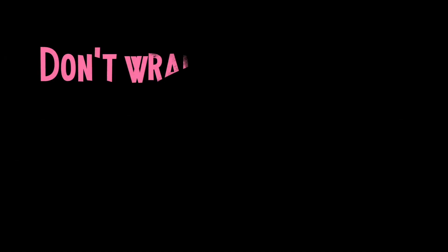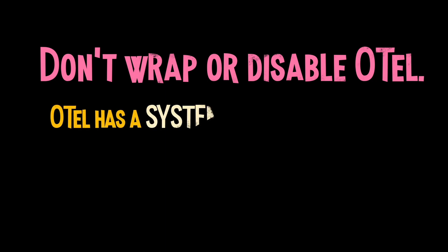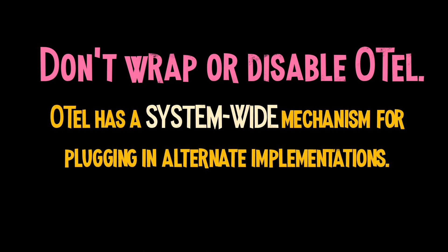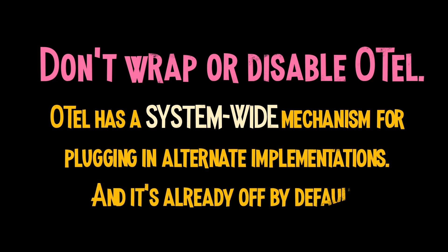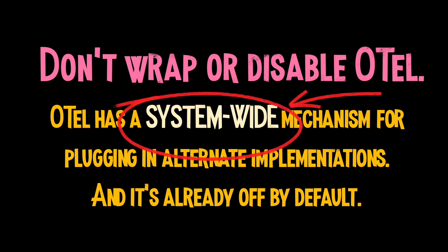Don't wrap the OTEL API up in another API, or otherwise make it off by default. The OTEL API already contains a mechanism which allows users to plug in their implementation of choice, and the API defaults to a no-op if they aren't using observability at all. The difference is that with OTEL, that same implementation is automatically installed everywhere, in all libraries using the OTEL API. This avoids a lot of hassle and ensures that tracing does not accidentally get broken.